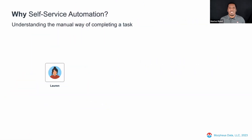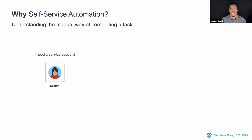The question that often comes up is: why self-service automation? To unpack that, we'll walk through understanding the manual way of completing a given task. In our example, we have Lauren, who's a developer, and she needs a service account. In order to get the service account created, Lauren is going to talk to Jane, the Active Directory administrator who has the rights and privileges to create the service account for Lauren.